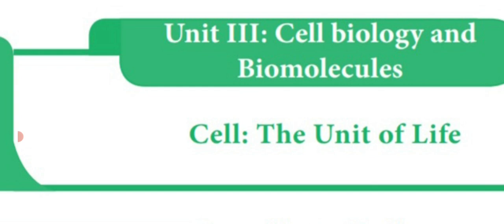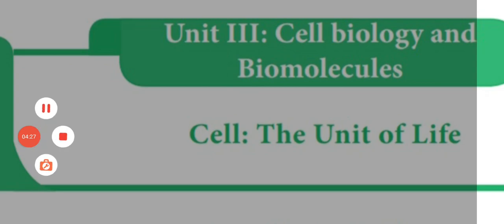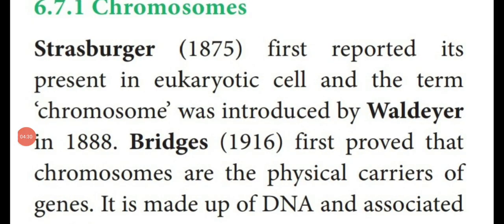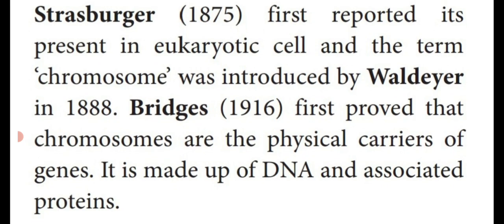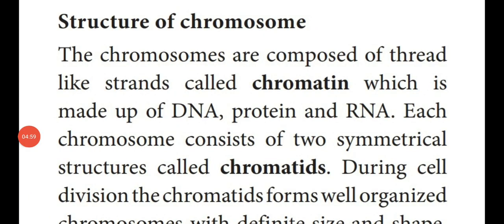Now we are going to see the structure and types of chromosome. Chromosome was first reported in eukaryotic cells by Strasburger. The term chromosome was introduced by Waldeyer, and Bridges proved that chromosomes are the physical carriers of genes. This chromosome is made up of DNA and associated proteins.